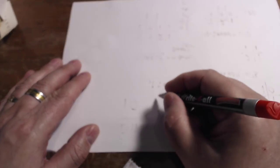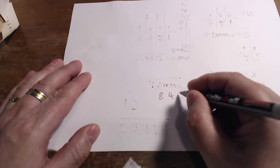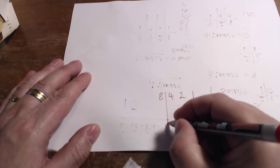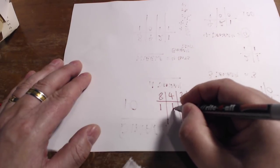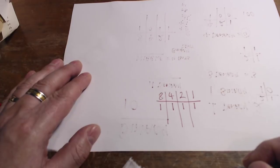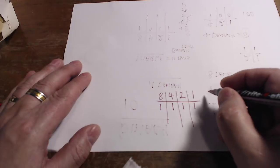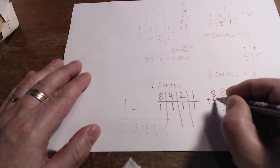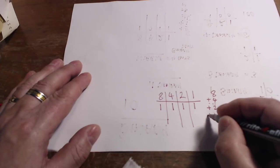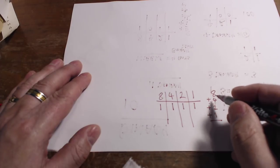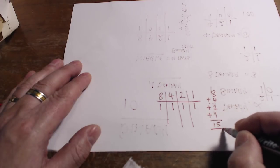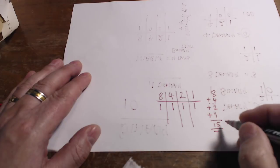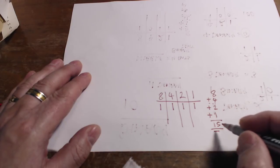So the maximum value I can have in a nibble is one one one one. But what is that in denary? Well, we can add all those up, of course. We can say eight plus four plus two plus one equals—eight and four is twelve, and two is fourteen, and one is fifteen. So the maximum value that we can have in a nibble is fifteen.